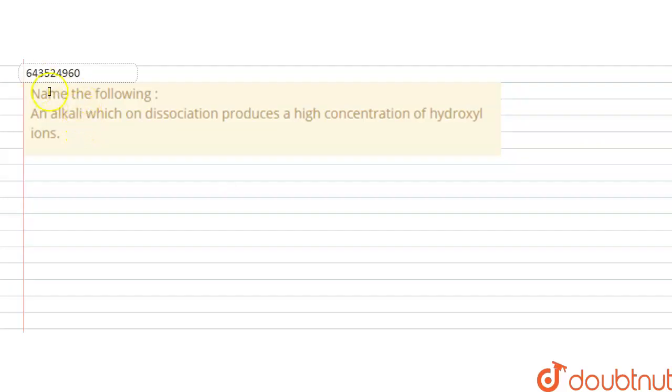Hello students, question is name the following: An alkali which on dissociation produces high concentration of the hydroxyl ions.